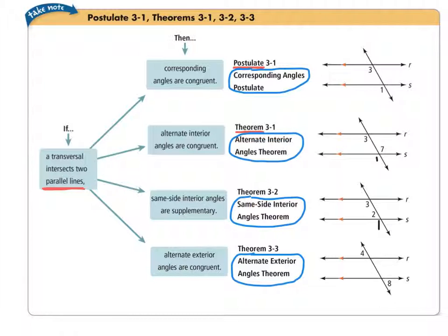Our last theorem: if a transversal intersects two parallel lines, then the alternate exterior angles are congruent. We can see that a couple of different ways. Taking a look at angle 2, what can you tell me about angle 4 and angle 2? They are corresponding angles, so our corresponding angles postulate tells us that angle 4 and angle 2 are congruent.